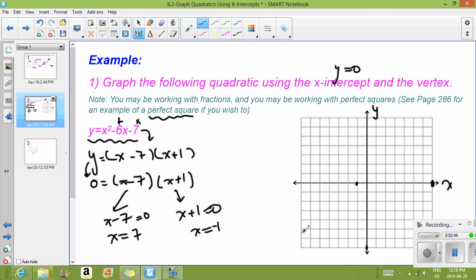And now we need to find the vertex. So remember, the vertex is taking our x-intercepts and finding halfway between it. So we can go 7 plus negative 1 divided by 2. Well, 7 minus 1 is 6 divided by 2.